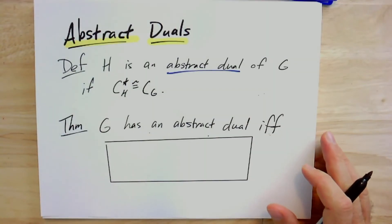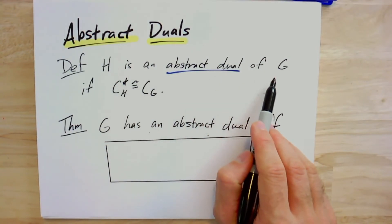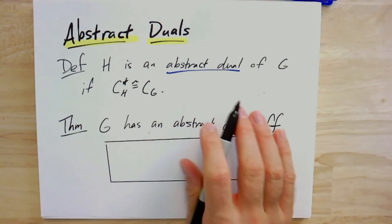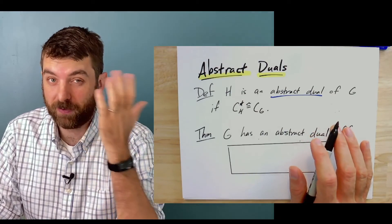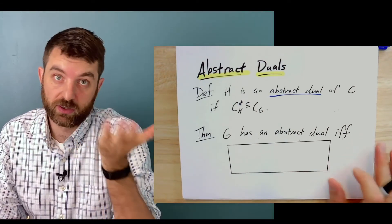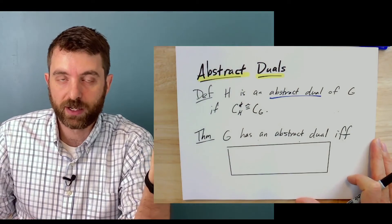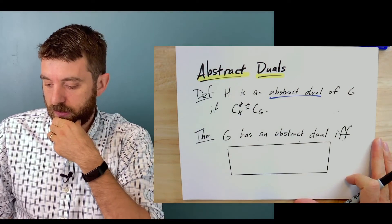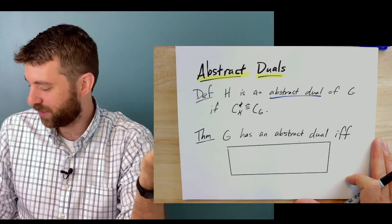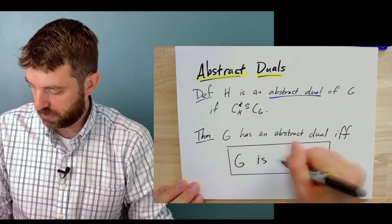This is true more generally for all planar graphs. We can define an abstract dual: H is an abstract dual of G if the cut space of H is isomorphic to the cycle space of G. For planar graphs the planar dual has this property, but you might wonder if non-planar graphs could also have abstract duals. It turns out this characterizes planar graphs: G has an abstract dual if and only if G is planar.